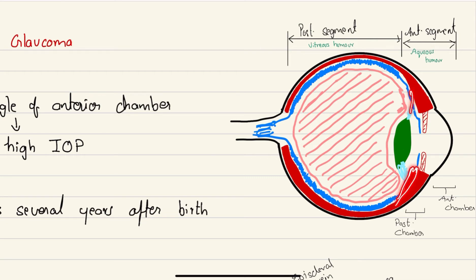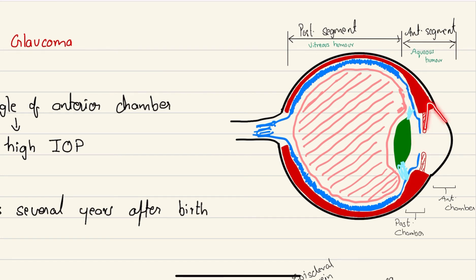Aqueous humor is produced by the ciliary processes. From the ciliary processes, it flows into the posterior chamber and from the posterior chamber it flows into the anterior chamber through the pupil. In the corner of the anterior chamber there is an angle-like structure made by the iris and the cornea — this is the iridocorneal angle. Structures present in this angle are responsible for drainage of aqueous humor. Overproduction or reduced drainage can lead to accumulation of fluid, increasing pressure inside the eye.